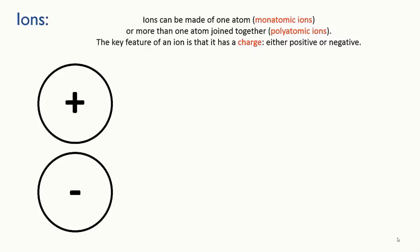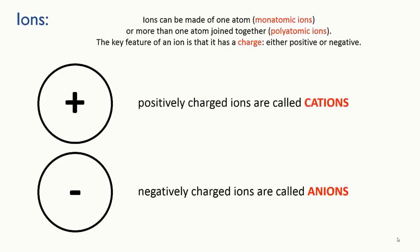And as you know, the key feature of an ion is that it has a charge. It can be either positive or negative. If the ion has a positive charge, then we call it a cation. And if it has a negative charge, we call it an anion.